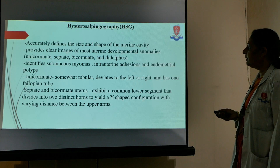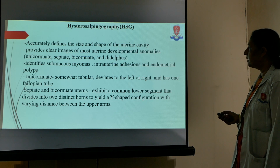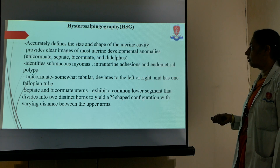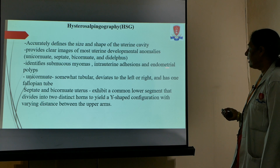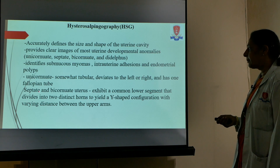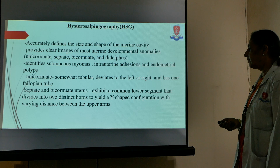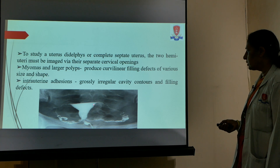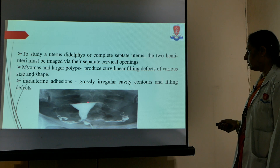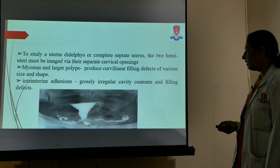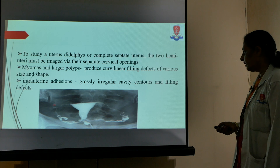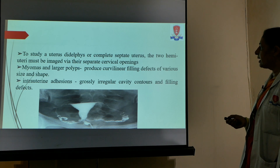HSG accurately defines the size and shape of the uterine cavity, provides clear images, and identifies submucous myoma or any intrauterine pathology. The disadvantage is that extra-uterine pathology cannot be detected. Intrauterine adhesions, endometrial polyps, unicornuate uterus, septate, sub-septate, and bicornuate uterus can all be seen on HSG. The pictured HSG shows a slightly arcuate-shaped uterus with the dye completely filling the cavity without defect, along with the tube and spillage at the pelvis.